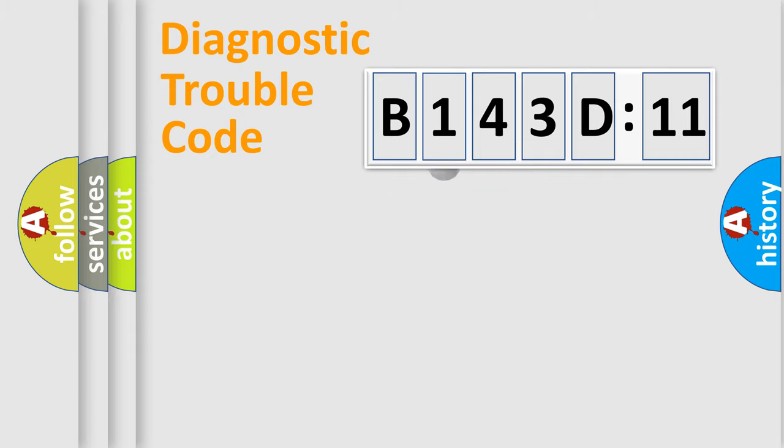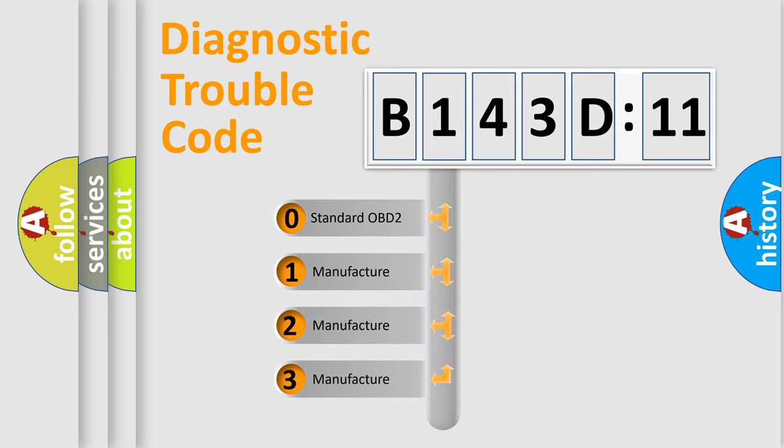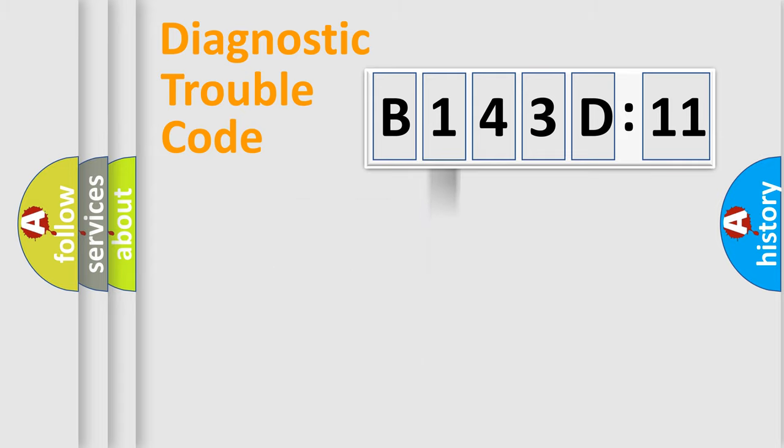The third character specifies a subset of errors. The distribution shown is valid only for the standardized DTC code. Only the last two characters define the specific fault of the group.